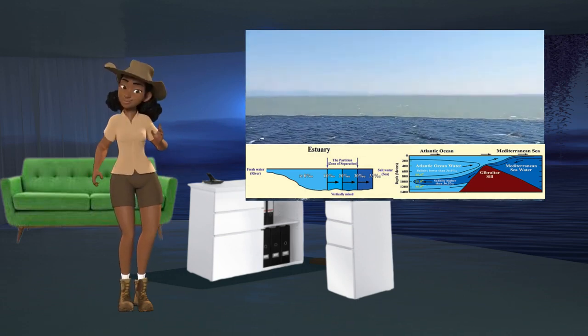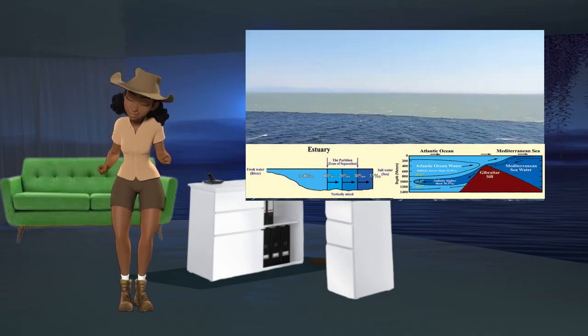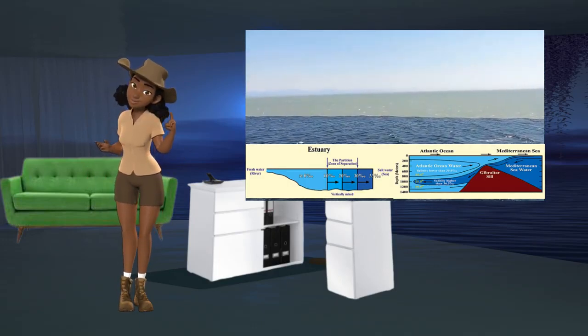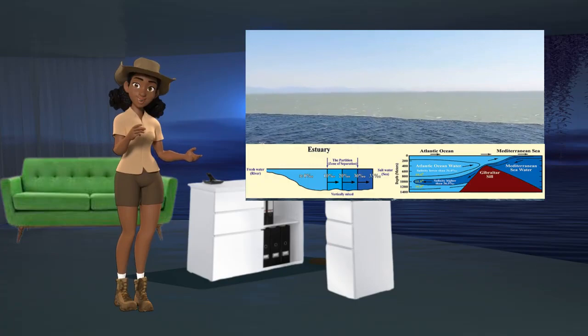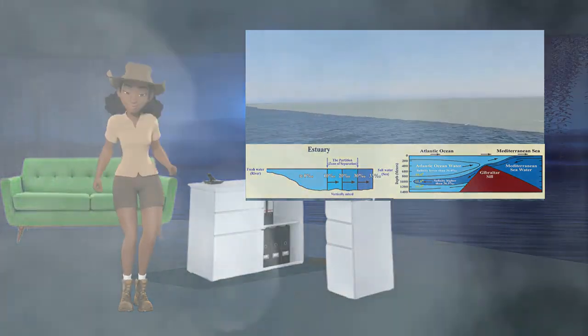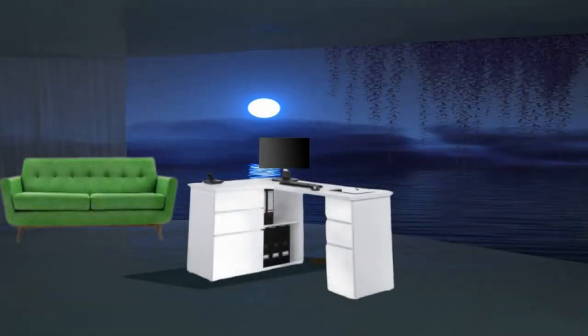The human eye cannot see the difference between the two seas that meet, rather the two seas appear to us as one homogeneous sea. Likewise, the human eye cannot see the division of water in estuaries into the three kinds: fresh water, salt water, and the partition zone of separation.